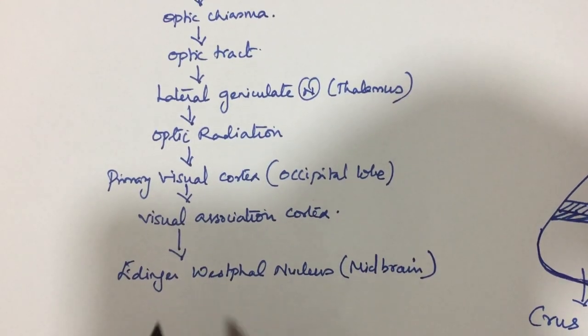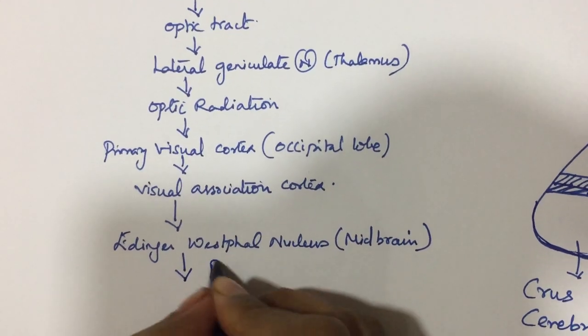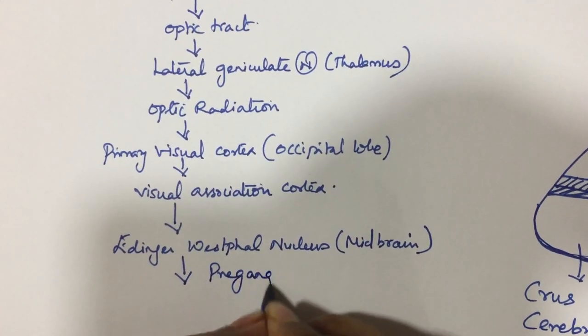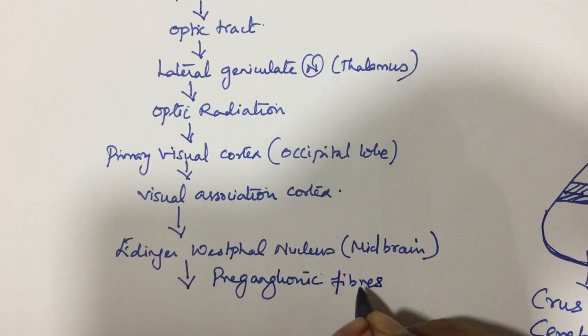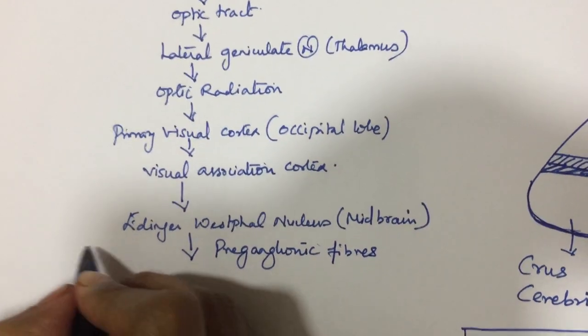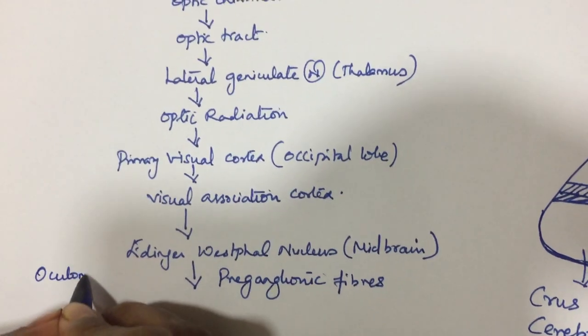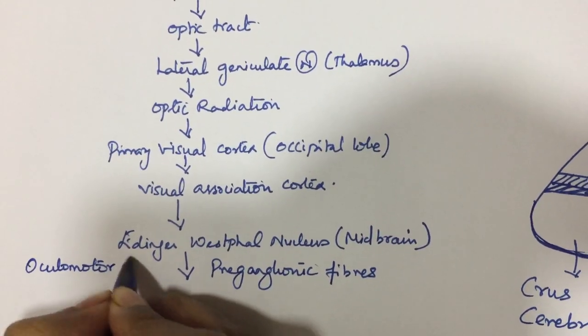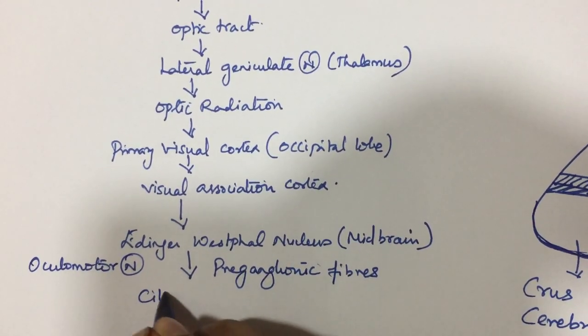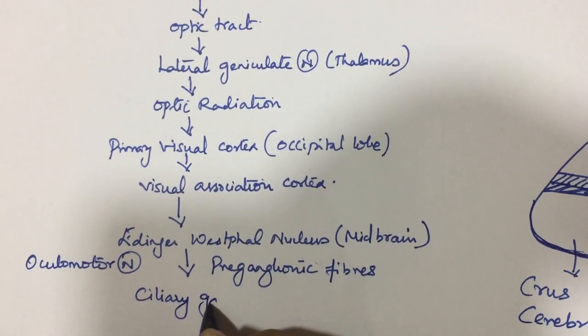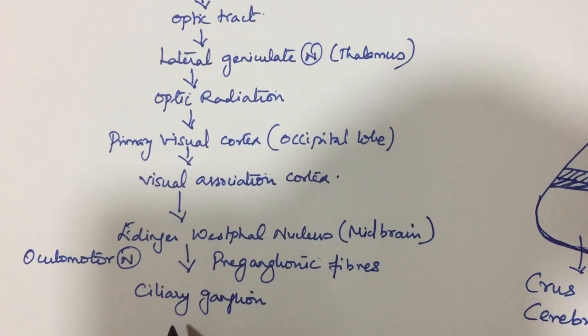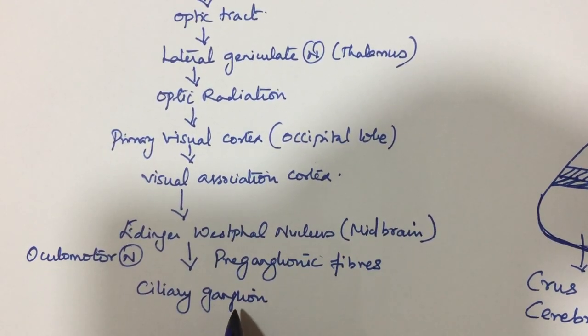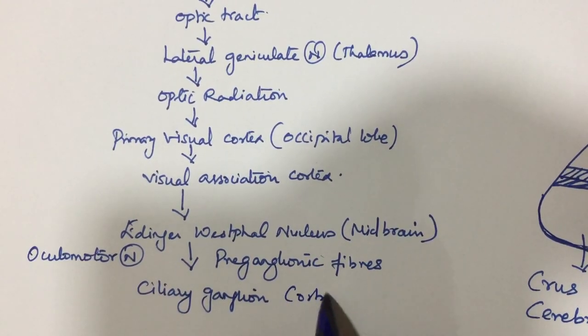From this Edinger-Westphal nucleus, preganglionic fibers pass through the oculomotor nerve to the ciliary ganglion. The ciliary ganglion is also a parasympathetic ganglion but it is present at the periphery, in the apex of the orbit.